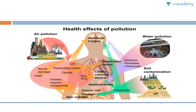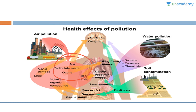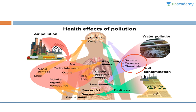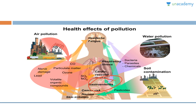Air, water, and soil pollution all affect human health. Air pollution: lead can cause nerve damage; carbon monoxide, particulate matter, and ozone may cause respiratory illness; volatile organic compounds may cause skin irritation, cancer risk, and nausea; sulfur dioxide and nitrogen oxides lead to respiratory illness. In water pollution, presence of bacteria, parasites, and chemicals may lead to headache, fatigue, or gastroenteritis. Soil contamination from pesticides may lead to nausea, cardiovascular diseases, headache, or fatigue.